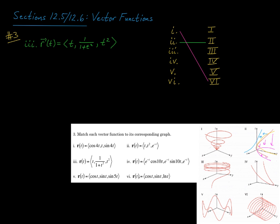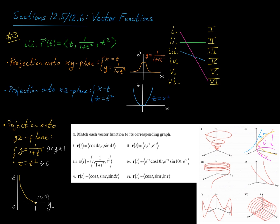Let's check out number 3. R of t is t comma 1 over 1 plus t squared comma t squared. You can approach this the same way by looking at projections. If we project onto the xy plane, x is t and y is 1 over 1 plus t squared. This is a parameterization for a bell-shaped curve — y equals 1 over 1 plus x squared. So projecting onto the xy plane should give a bell-shaped curve, and we see that in graph 4.